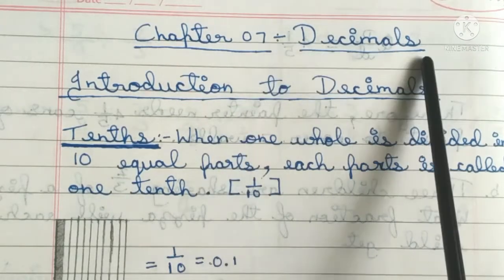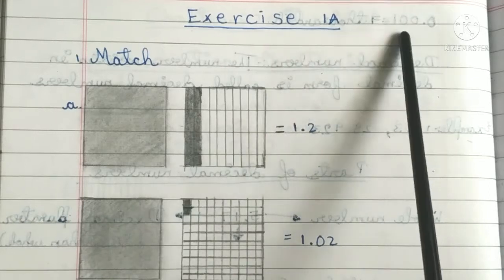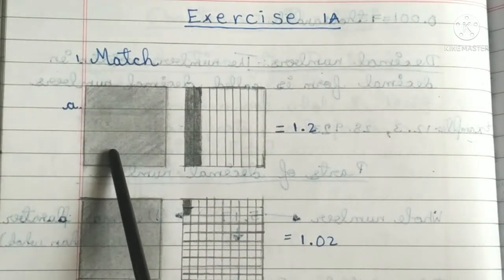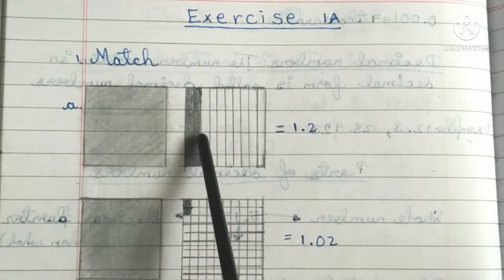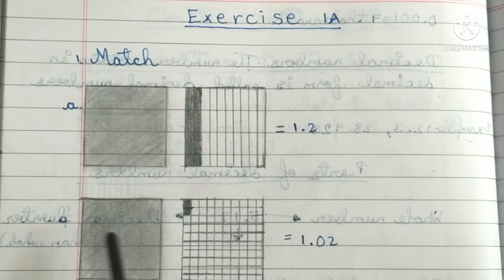Chapter Number 7, Decimals. Exercise 7a, Match: First one, full box shaded with two point shaded, that is equal to 1.2. Second one, 1.02.